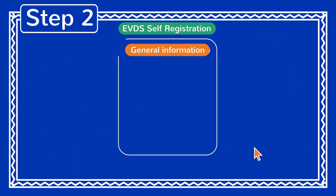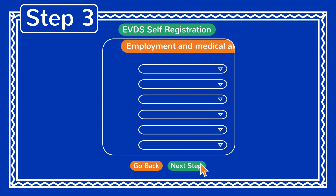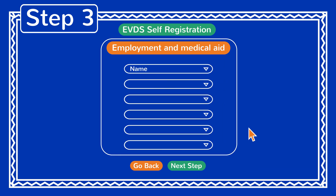Step 2: Everything will be ready for you to follow the instructions. Step 3: The system wants to know your facts too. Put in all the information that the system is asking for.